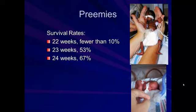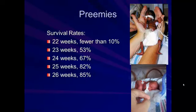At 24 weeks, the survival rate is 67%. At 25 weeks, it's 82%. And at 26 weeks, it's 85%. So while 26 weeks is still quite early, the survival rate has jumped dramatically just in the four weeks from the 22-week mark, and that has to do with things like development in the lungs.